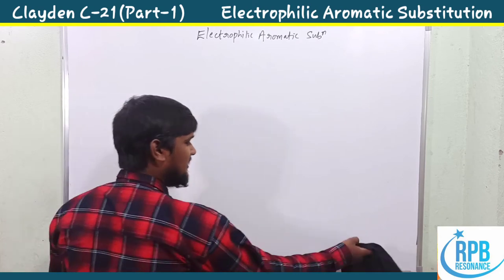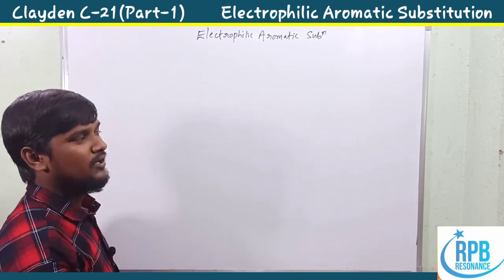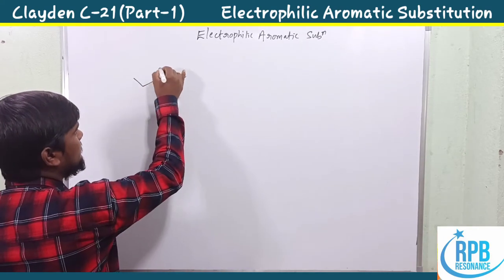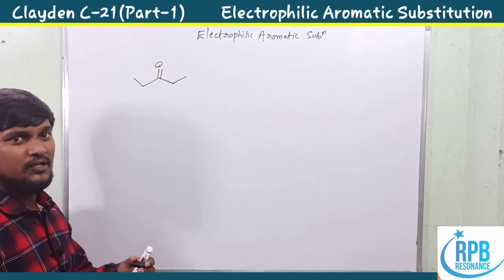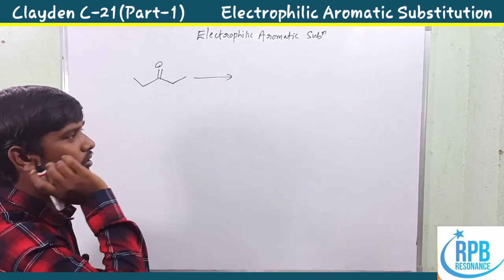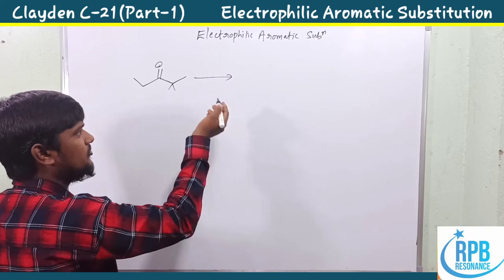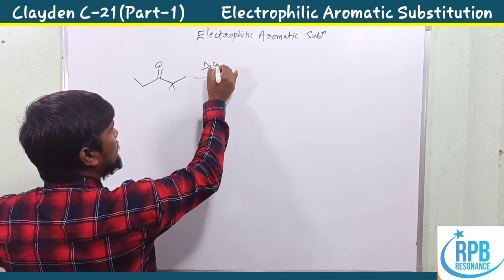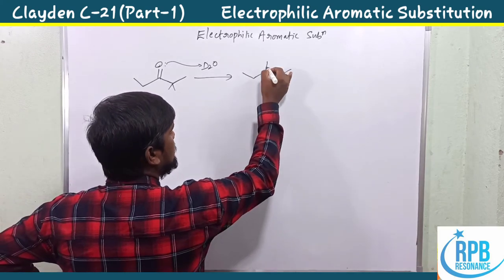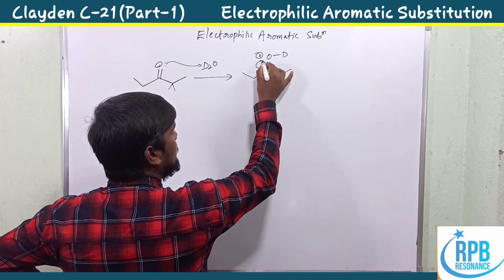This is the initial video of Chapter 21. Before going to the main topic, we need to be aware of keto-enol tautomerism. Consider the compound 3-pentenol. It easily undergoes keto-enol formation. In the presence of deuterium, it undergoes keto-enol tautomerization, producing D⁺.